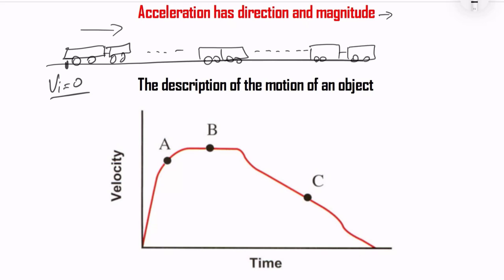So to summarize: the velocity increases in the first phase, then we have constant velocity, then the velocity decreases. We will discuss what each of these means on the graph.